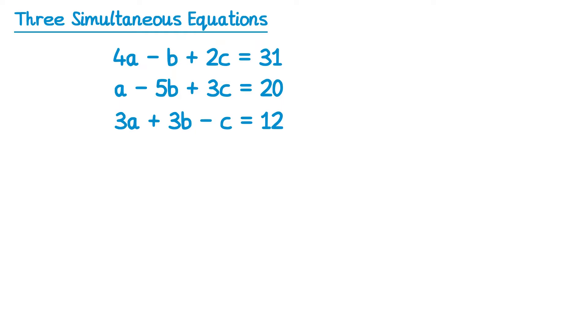To do this we first of all number the equations, so the first one 1, then 2 and then 3. Now we select just two of the equations, we ignore one of them for the moment, and once we've selected those two equations we choose one of the letters to eliminate.